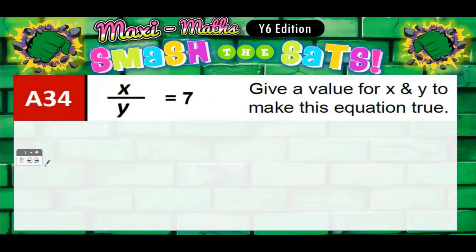Question 34. Now the good news about this is it's easier than it looks. So a bit of algebra: x divided by y equals 7. Remember this line here means divided by, so the top number divided by the bottom number got to be 7. And we've got to give a value for x and y to make that true.